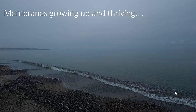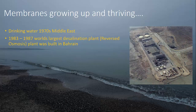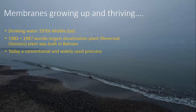Membranes growing up and thriving — how did it all start? It started in the Middle East where they used to distill water, which was very costly. By using membranes they could desalinate water at a much lower cost, and in 1983 a large project was started in Buckgrain where the largest desalination plant at that time was built. You can see the pre-treatment step, then the reverse osmosis step — the heart of the desalination plant — and finally the post-treatment and storage tanks for the produced drinking water.